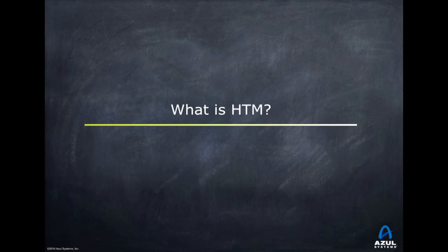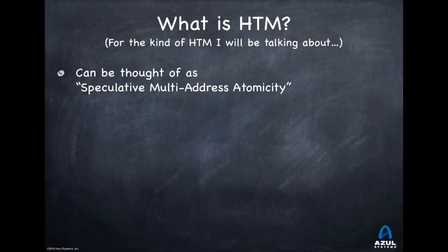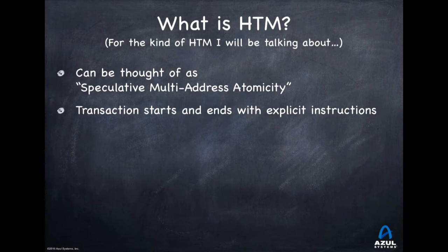So what is hardware transactional memory? I'm talking about a specific kind — the kind that's in the Intel chips. You can think of the main feature as speculative multi-address atomicity: an atomic operation across multiple addresses of memory that is done without being sure it can actually be done, so speculatively. You're probably very used to speculative single-address atomicity — compare and swap, things like that. But this is across many addresses and for a lot of operations. A transaction starts and ends with explicit instructions that say: start the transaction, do stuff, end the transaction. So there's a begin and an end instruction.